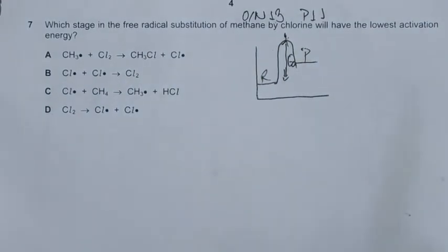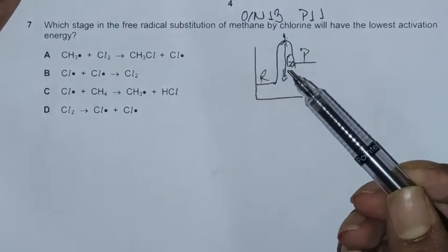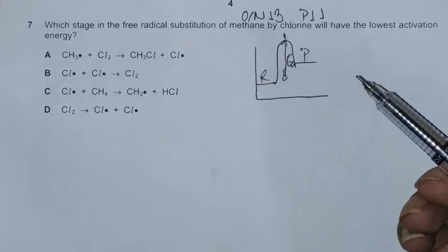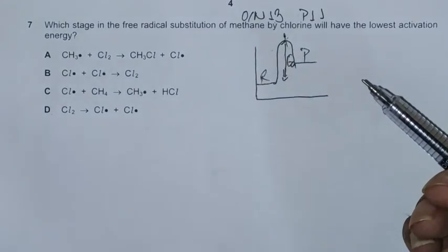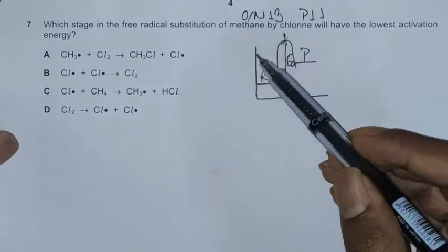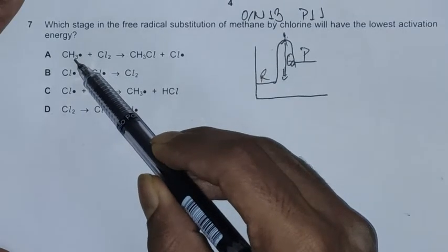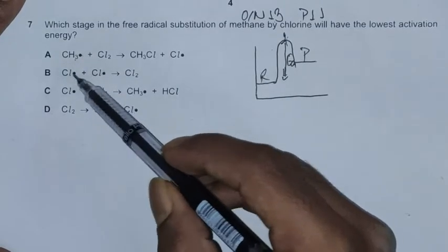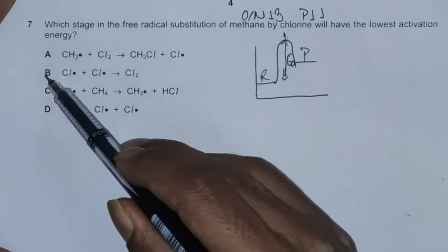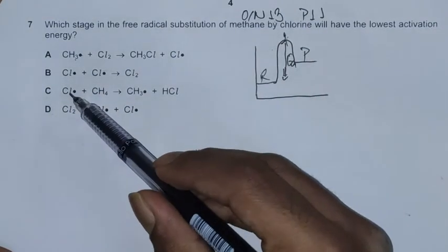The reactant where we have more free radicals should have the lowest activation energy, meaning the reaction should proceed with ease. Looking at the answer choices, option A has methyl free radicals and two chlorine free radicals. This is our best candidate. Option B has one chlorine free radical, and option C has no free radicals.